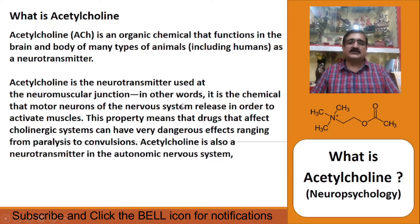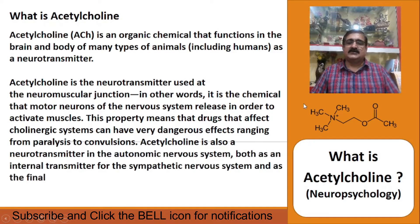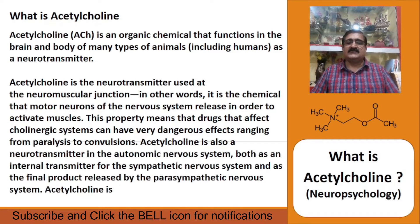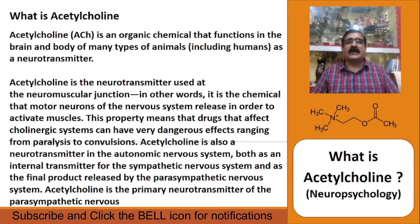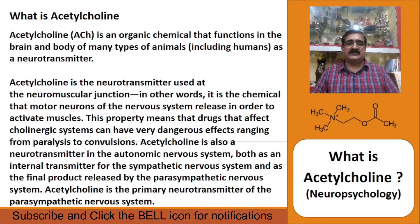Acetylcholine is a neurotransmitter used at the neuromuscular junction. In other words, it is the chemical that motor neurons of the nervous system release in order to activate muscles. This property means that drugs that affect the cholinergic system can have very dangerous effects, ranging from paralysis to convulsions.